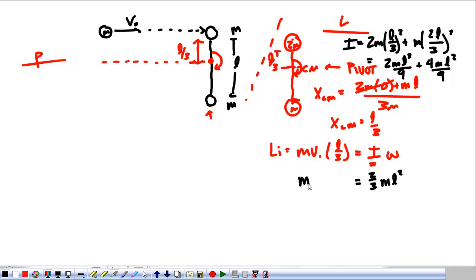So we have MV0 times L over 3 is equal to 2/3 ML squared. 3s go away. L goes away. M goes away. All that's times omega. Carry it down. So the final spinning, final angular momentum of that system, omega is going to be V0 over 2L. That's how fast that whole thing is going to spin about that point.